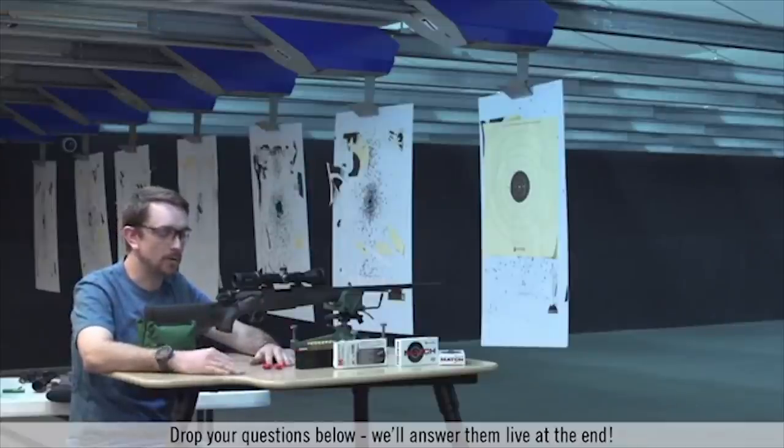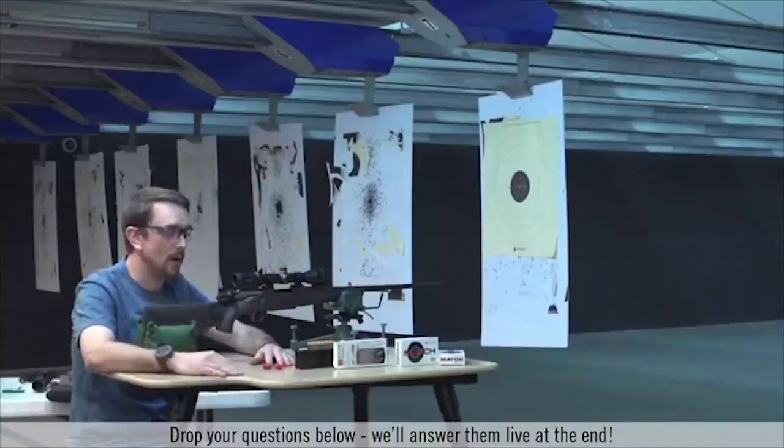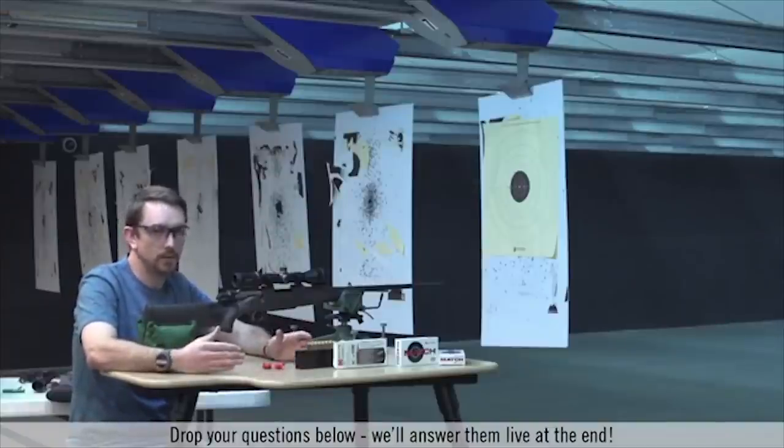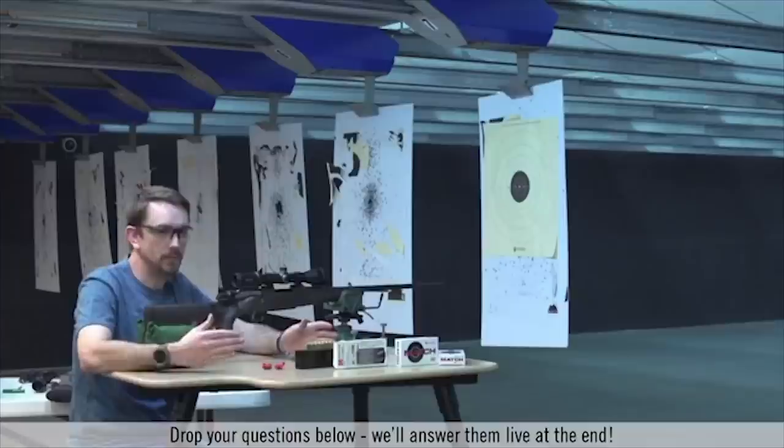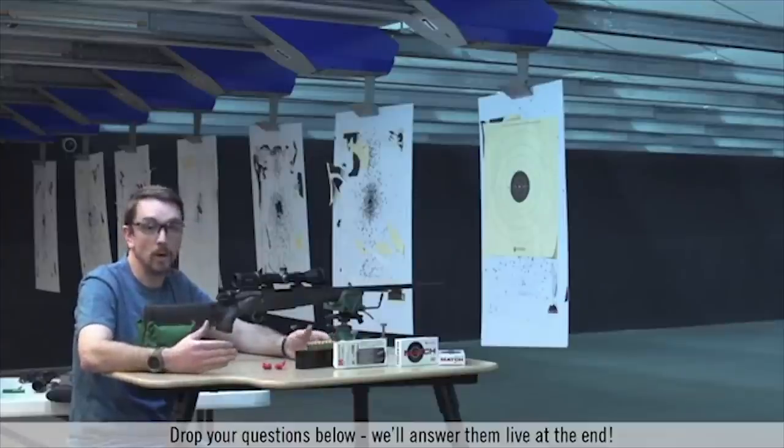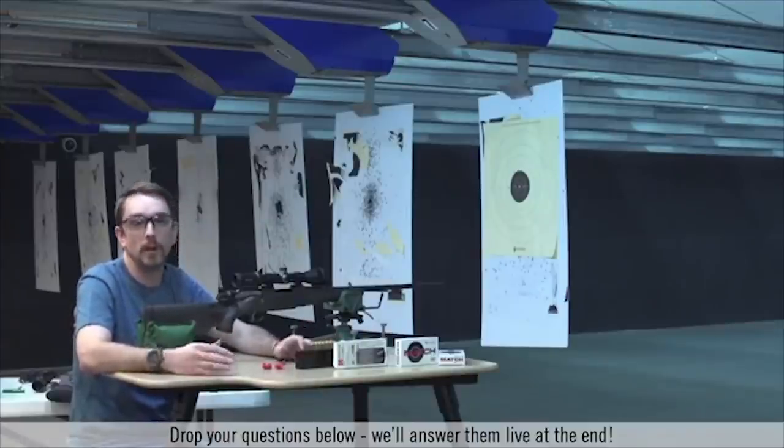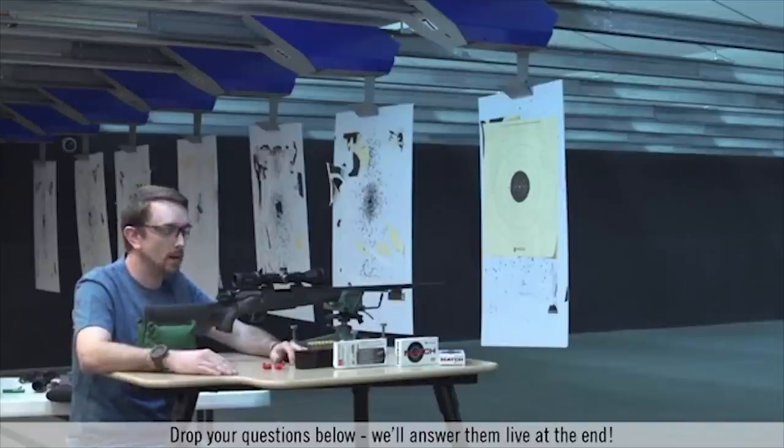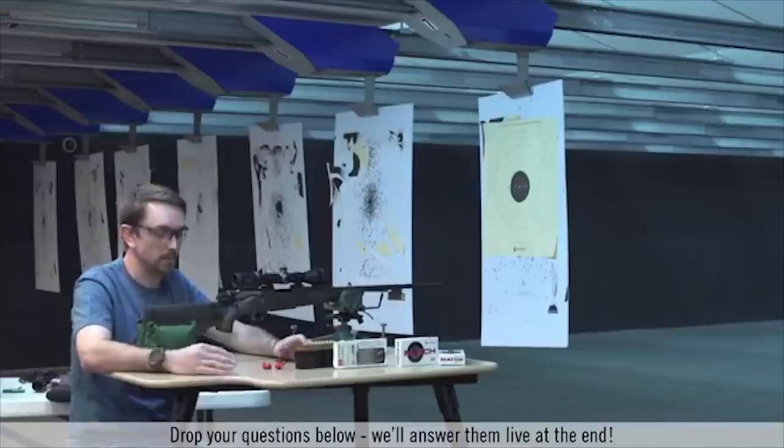So great question on where to zero, at what distance rather. Pick a zero distance based on your intended game species or what kind of shots you're going to encounter. I wouldn't recommend doing say a 300 yard zero if you're going to be hunting in the northern woods of Wisconsin, you might have a 50 yard shot or a 25 yard shot. You might want to tone it down just a little bit.